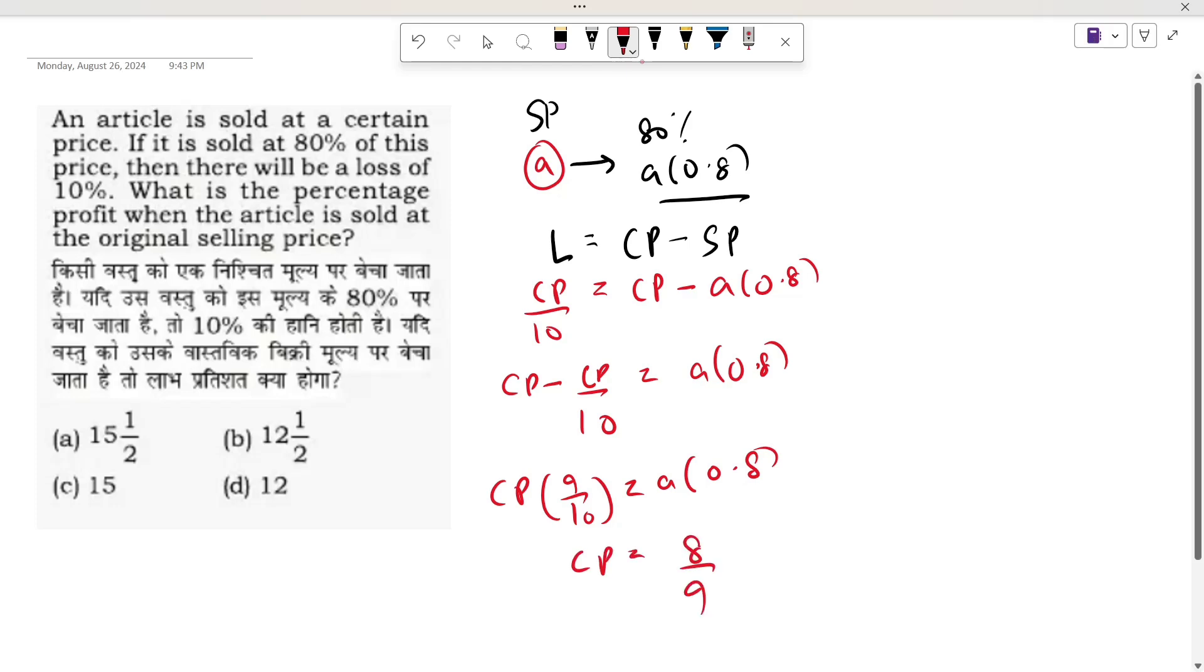8 upon 9. Cost price is 8 upon 9. What is the percentage profit when the article is sold at the original selling price? The original cost price came out to be 8A upon 9, and the original selling price was A.